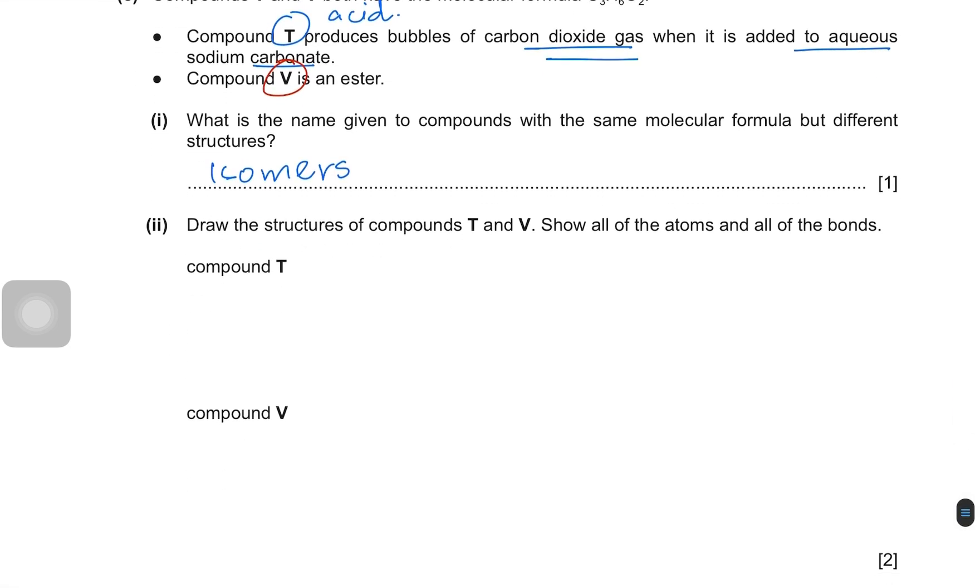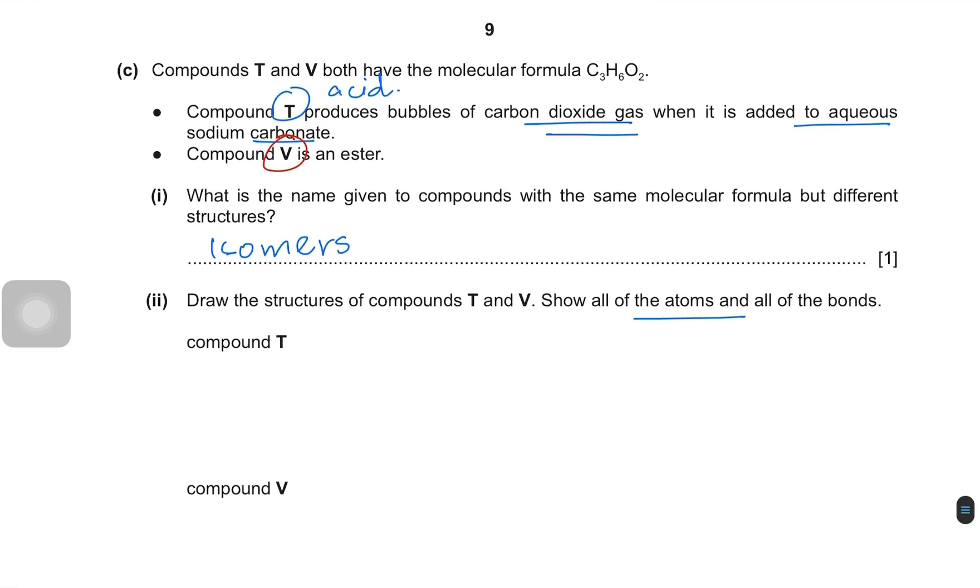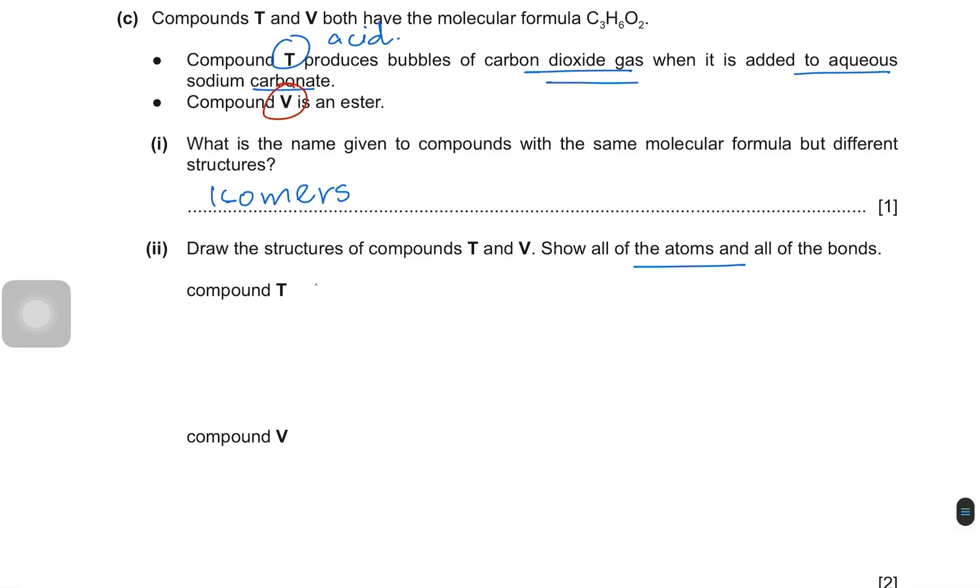Draw the structure of the compounds T and V, show all of the atoms and all of the bonds. T like we said was a carboxylic acid. So it's obviously going to be propanoic acid. So it's going to be three carbon atoms. The carboxylic acid functional group like this. And the rest of them should be hydrogens. That is propanoic acid.